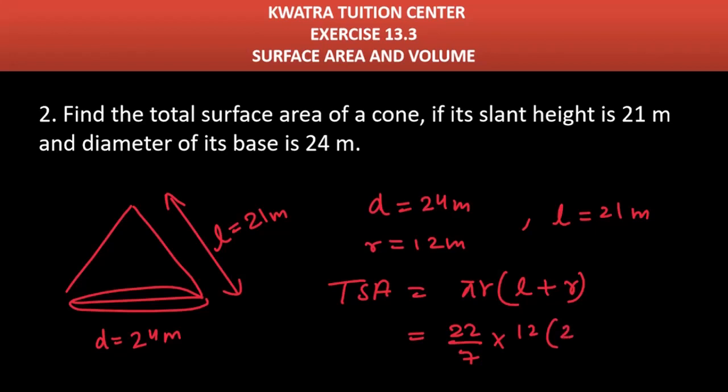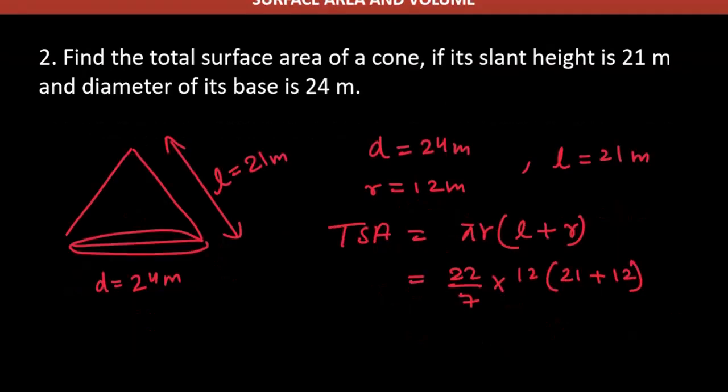21 plus 12, how much will be? 33. This is 22 over 7 into 12 into 33. So your answer on the numerator side is 8712 divided by 7.